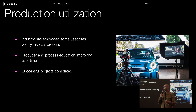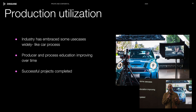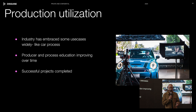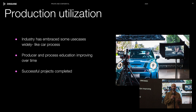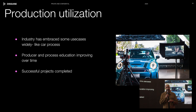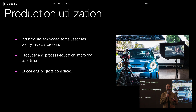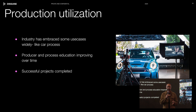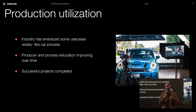Right now, there are certain use cases where virtual production is absolutely the go-to. For example, any kind of car process work where you have actors inside of a car is most of the time done inside of a stage. Movies like Barbie, Fast and Furious, and Bullet Train have all used Disguise for car process. This is one of those killer use cases that gets studios more comfortable with virtual production.